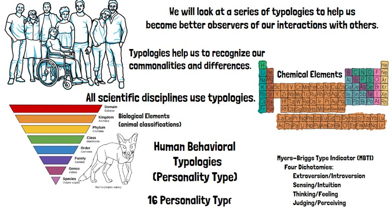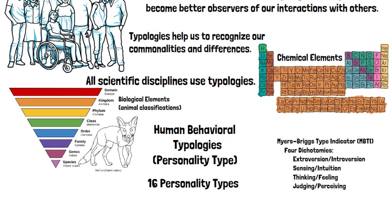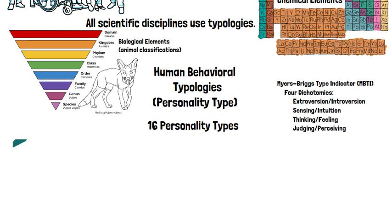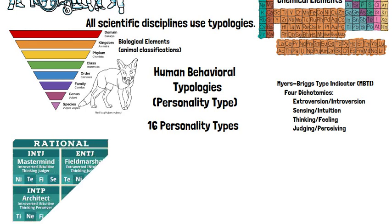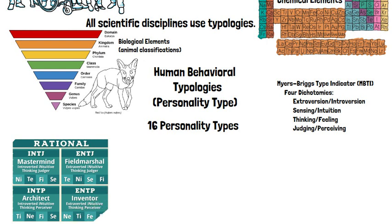Let's look at those dichotomies. The first one is extroversion and introversion. The second is sensing and intuition. The third is thinking and feeling. And the fourth is judging and perceiving.